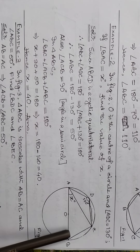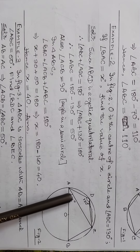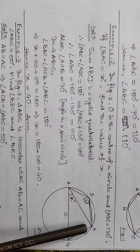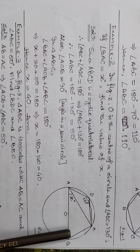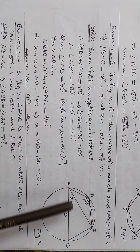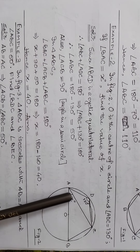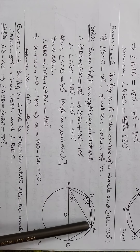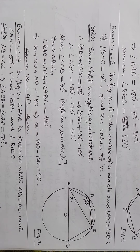Angle ACB is 90 degrees, and angle ABC is 50 degrees. Using the angle sum property of triangle ABC: 90 plus 50 equals 140, so x equals 180 minus 140, which equals 40 degrees. Therefore x equals 40.